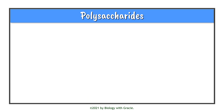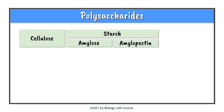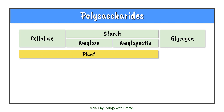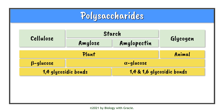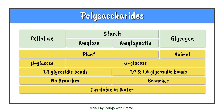Now let's talk about polysaccharides. You need to know about cellulose, starch — including amylose and amylopectin — and glycogen. Cellulose and starch are both found in plants, whereas glycogen is found in animals. Cellulose is made up of beta glucose, whereas starch and glycogen are made of alpha glucose. Cellulose and amylose have 1,4 glycosidic bonds, whereas amylopectin and glycogen have both 1,4 and 1,6 glycosidic bonds. Cellulose and amylose are unbranched, whereas amylopectin and glycogen are branched. They are all predominantly insoluble in water.